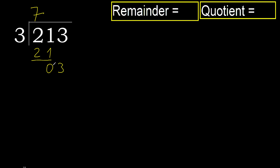Next, bring down the 3. 3 multiplied by 2 is 6 — 6 is greater. 3 multiplied by 1 is 3 — 3 is not greater.